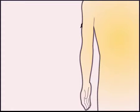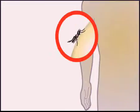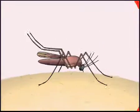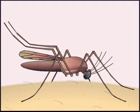The parasite Plasmodium falciparum is responsible for most of the world's malaria cases. It has evolved in concert with its human and mosquito hosts and displays a complex life cycle that alternates between the two.